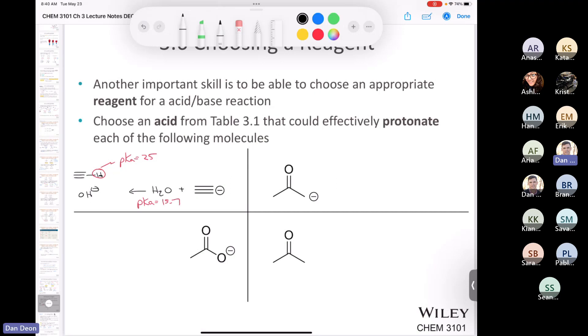If we look at the next one, we have the conjugate base of a ketone. In that case, we might need something a little stronger and you could use something like hydronium to protonate that. So if you protonated that, that would give you the ketone plus water. So if we look at the pKa of the acid, it has a pKa equal to, sorry, did I say 15.7? That's water. There's a pKa of negative 1.7 and the pKa of acetone is going to be around 19. So that would be an appropriate choice.